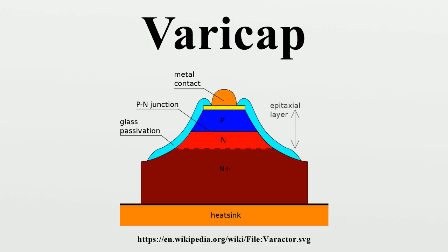Generally, the use of a varicap diode in a tuning circuit requires connecting it to a tuned circuit, usually in parallel with any existing capacitance or inductance. Because a DC voltage must be applied reverse bias across the varicap to alter its capacitance, this must be blocked from entering the tuned circuit. This is accomplished by placing a DC blocking capacitor with a capacitance about 100 times greater than the maximum capacitance of the varicap diode.